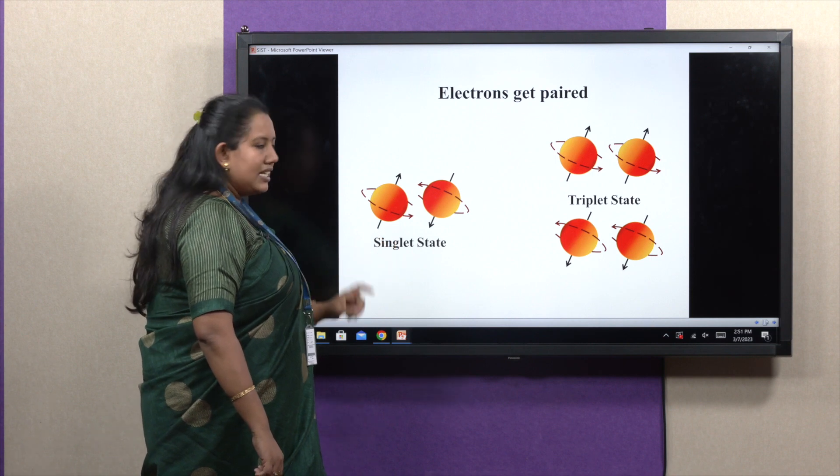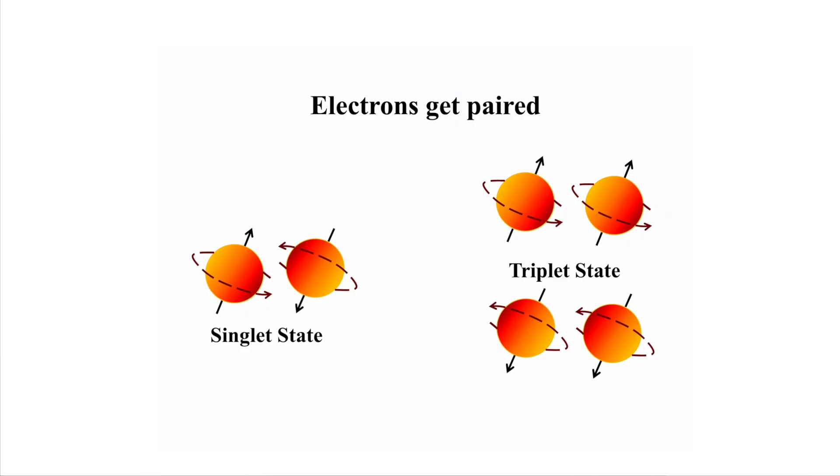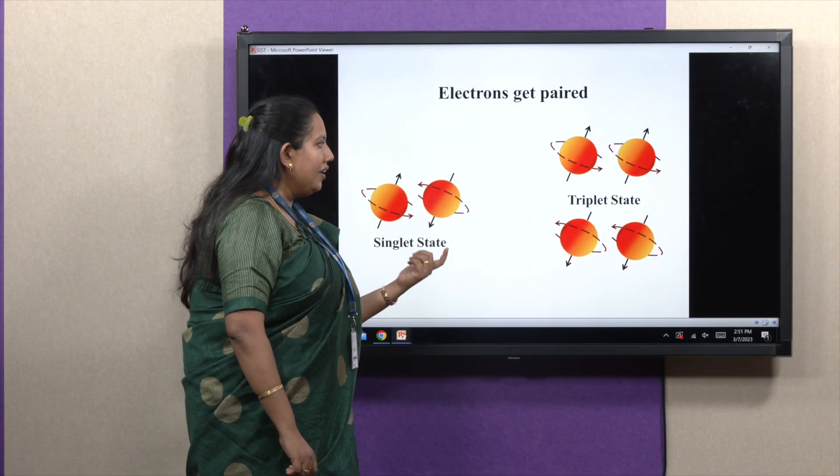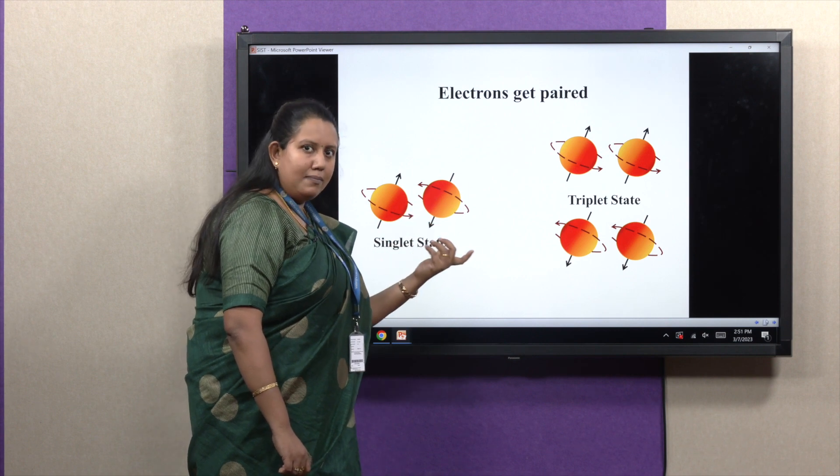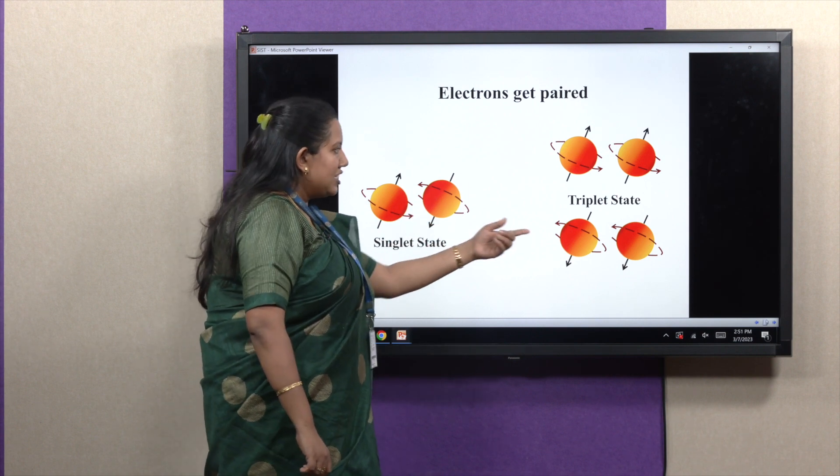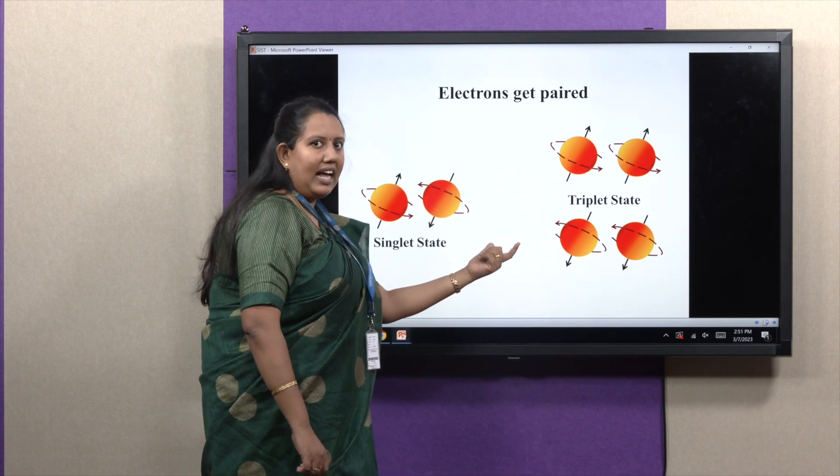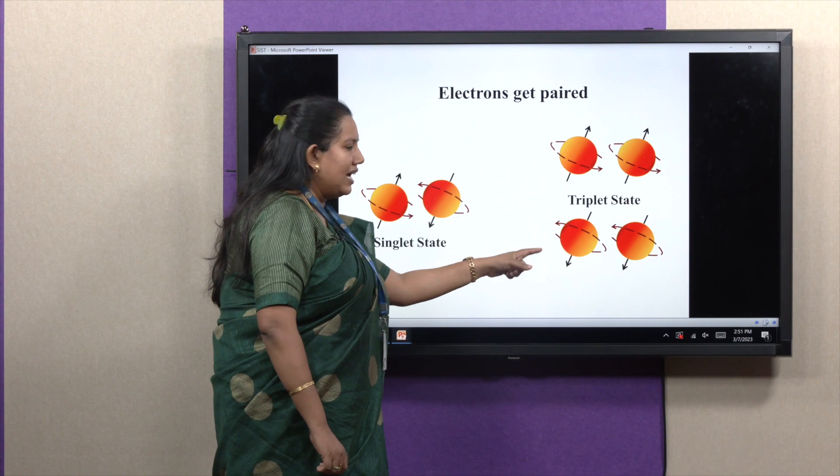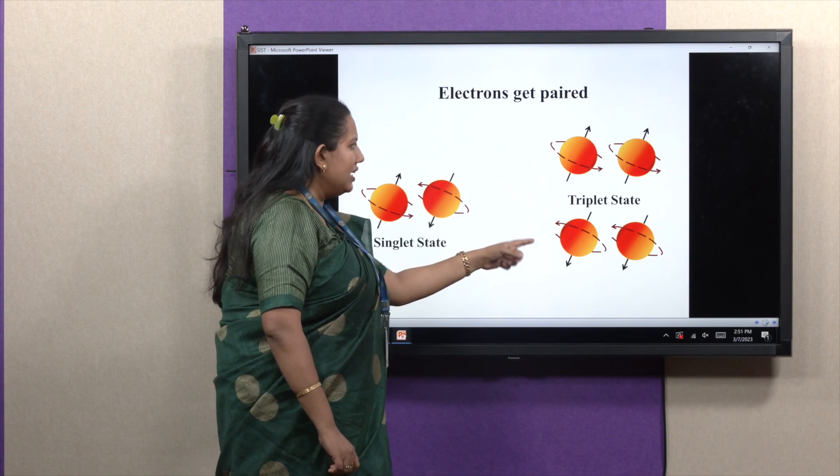For triplet state, the value of net spin will be 1, plus half plus half equals 1, or minus half plus minus half also equals 1. So the spin multiplicity, if we calculate using the formula 2S plus 1, it will come as 3. That's why we call it triplet. These two terms we will be using in our Jablonski diagram.